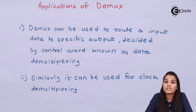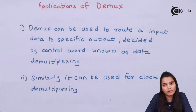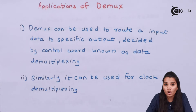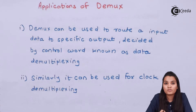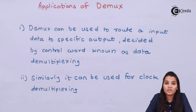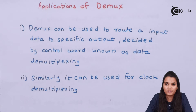Suppose there is a one-to-eight demultiplexer — it has one input and eight output lines. That means you can distribute one clock to eight different specific outputs. So one clock can be distributed to many counters and many timers. This is a very important and popular application of the demux in digital electronic circuits.